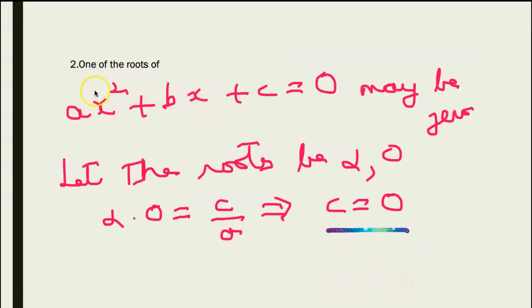Find the condition that one of the roots of ax² + bx + c = 0 may be 0. So let the roots be alpha and 0. So I have alpha × 0 = c/a, which means c = 0.